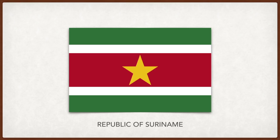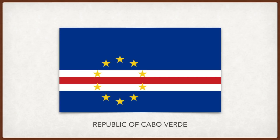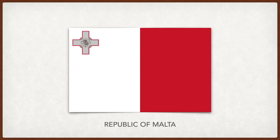Malta: traditionally the colors were said to be given to Malta by Roger I of Sicily in the 11th century; the more likely origin is the flag of the Knights of the Hospital of Saint John of Jerusalem. The George Cross in the canton represents the George Cross awarded to Malta by George VI of the United Kingdom in 1942 for the heroism and devotion of the people during World War II.